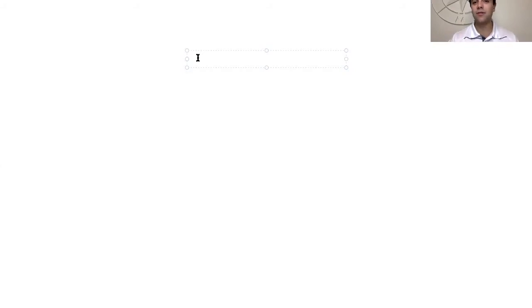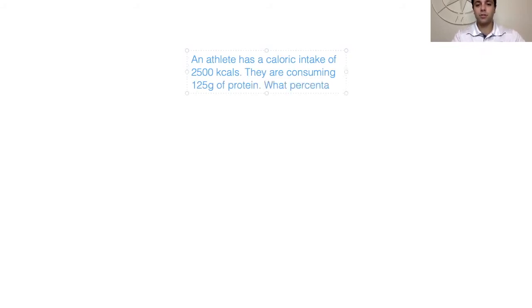We're going to start off really basic in terms of how do you do some basic division without a calculator. A lot of times we can get a question like: an athlete has a caloric intake of let's say 2,500 kcals, they are consuming let's say 125 grams of protein. What percentage of their total caloric intake is from protein? This could very feasibly be a question that you actually see.